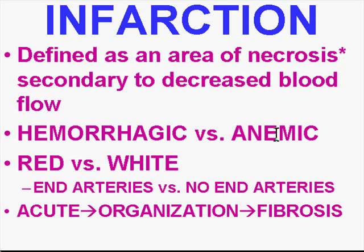If the organ has end arteries — like the heart, kidney, or spleen — we talk about anemic infarcts, because there is no secondary blood supply around them. They look pale in the acute phase. With time they can turn white due to fibrosis. If you see fibrosis as the primary process in an infarct, you know it's not recent — it's at least months and possibly years old.